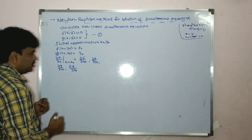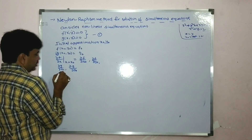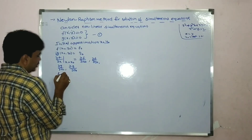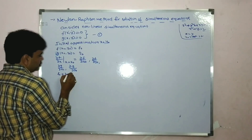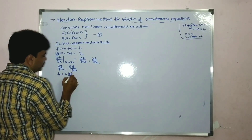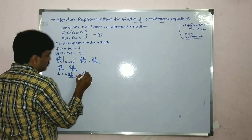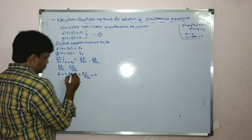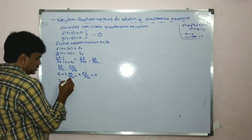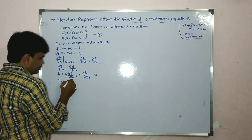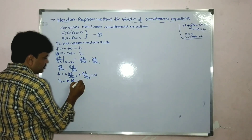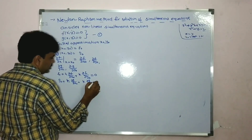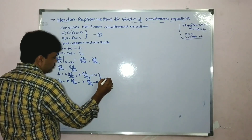Thereby we have two equations. The equations are: f0 plus h into ∂f/∂x₀ plus k into ∂f/∂y₀ equal to 0, and similarly for g — say this is equation two.